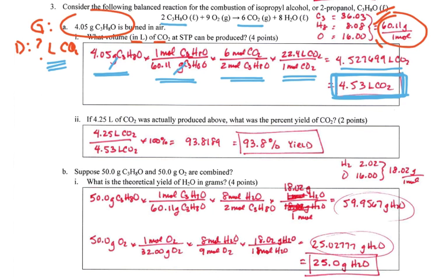Now the second part of this problem says, if 4.25 liters of CO2 was actually produced, what was the percent yield? So this is our calculated answer, and that would be our theoretical yield. So theoretically, we should get 4.53 liters of CO2. What if we only got 4.25 liters? We're just going to set up a little equation and say 4.25 liters over 4.53. So the actual yield over the theoretical yield times 100%, and I get 93.8%.